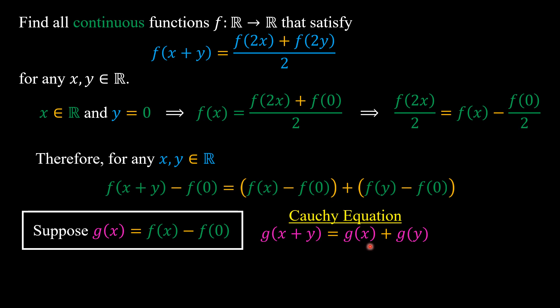Maybe some of you will jump to the conclusion g(x) equals a constant c times x. Well, that answer is correct because we have g is continuous functions. And I need to tell you that if we remove this continuous property, the solutions of Cauchy equation is not always linear functions.